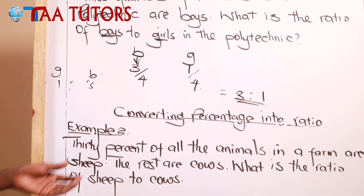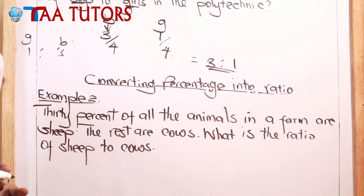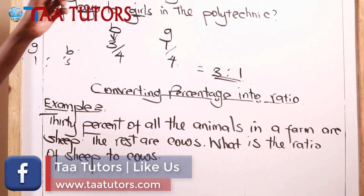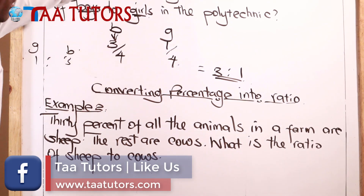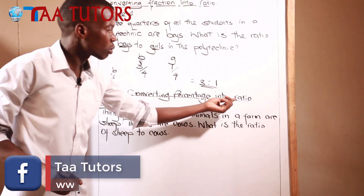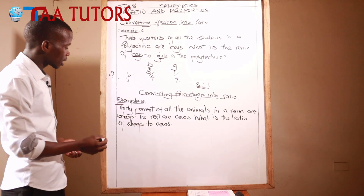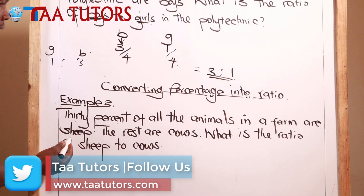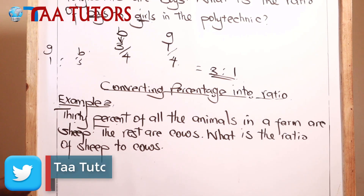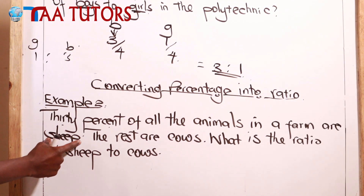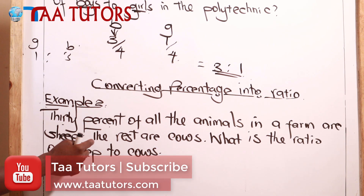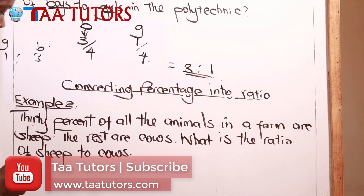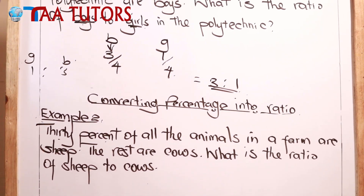Now let's look at the next example: converting percentage into ratio. What we had before was fraction to ratio, but now we are dealing with percentage to ratio. Thirty percent of all the animals in a farm are sheep. The rest are cows. What is the ratio of sheep to cows?